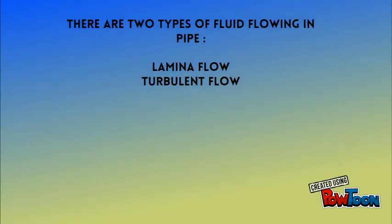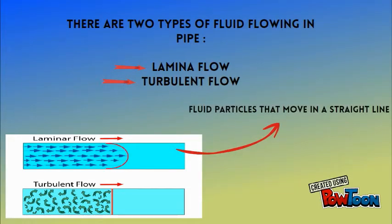There are two types of fluid flow in pipe. There is laminar flow and turbulent flow. Laminar flow is fluid particles that move in a straight line, and turbulent flow is fluid that undergoes irregular flow.